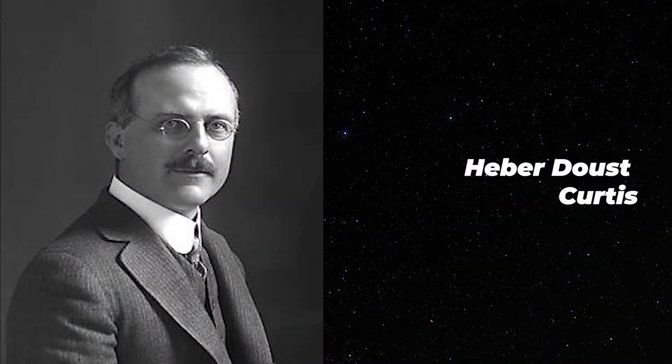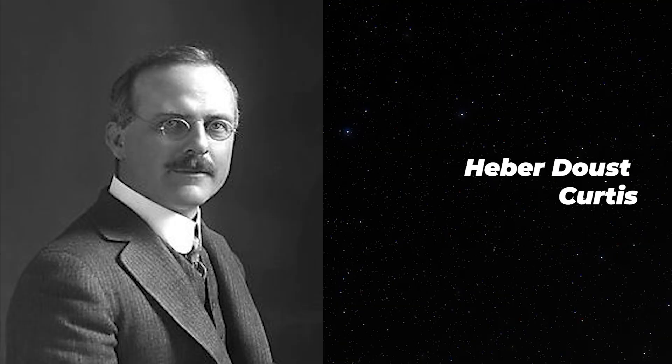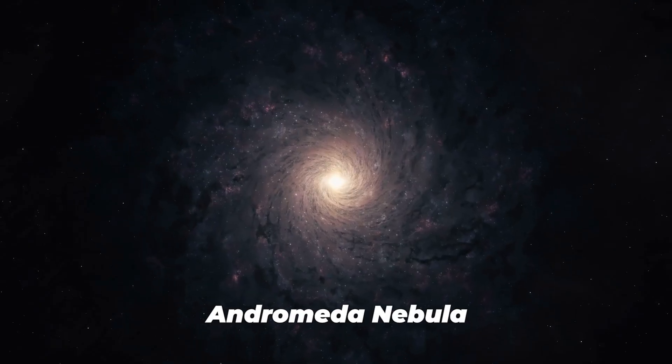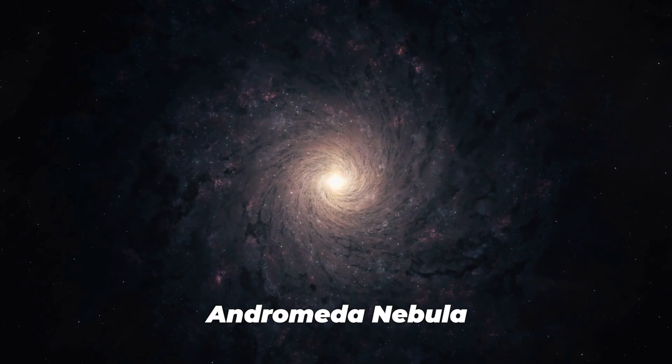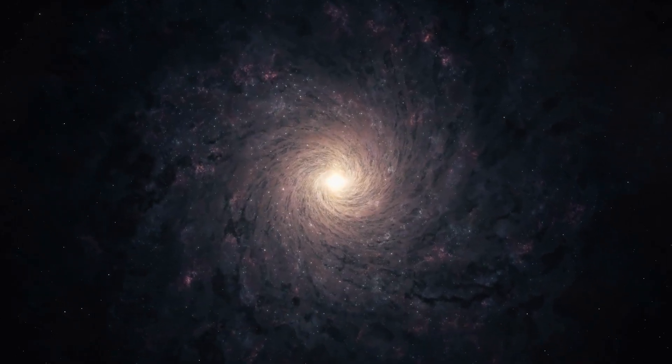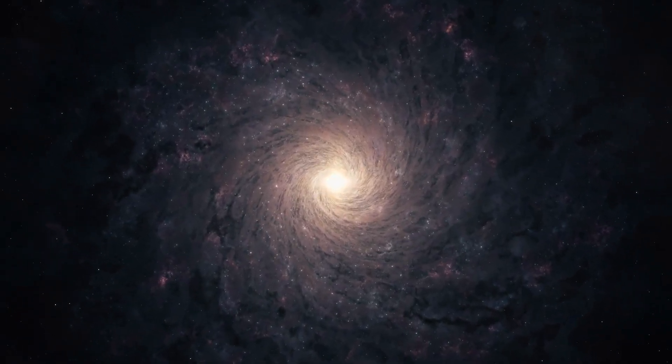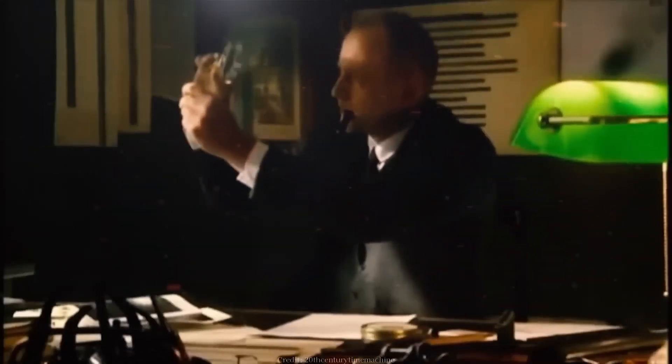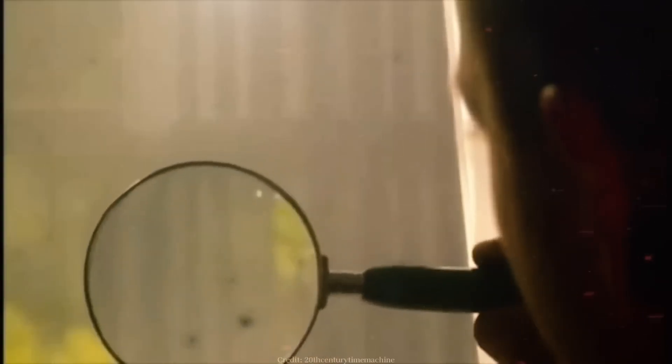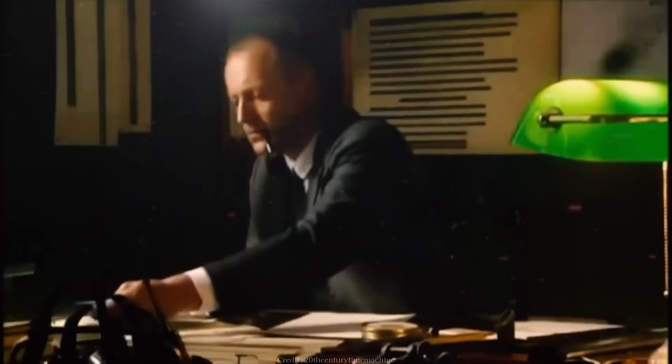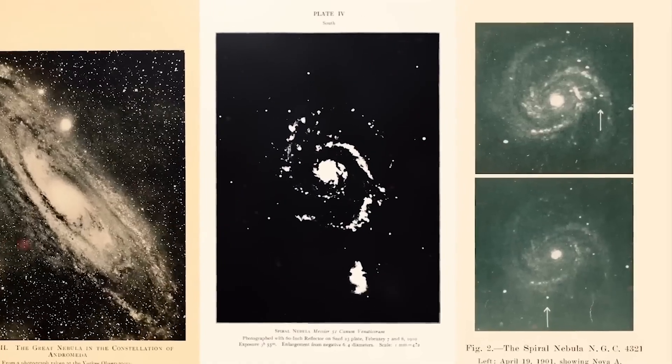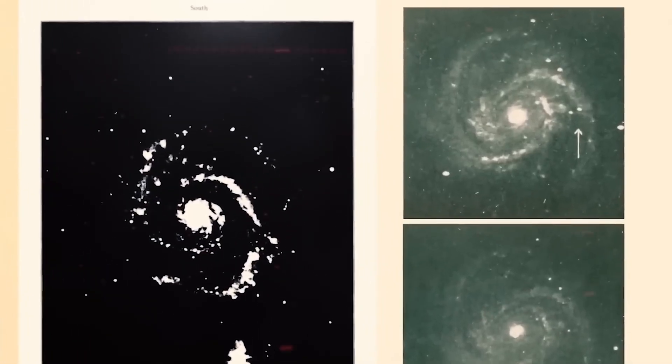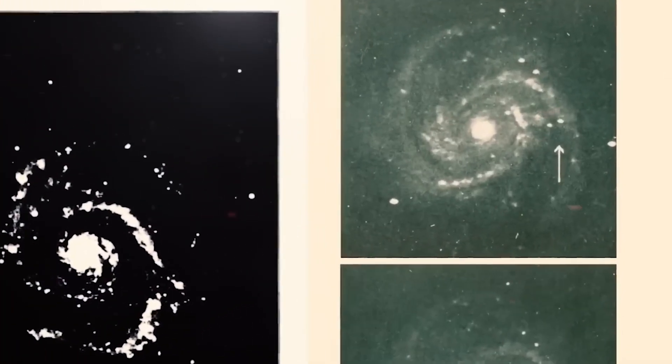Then in 1917, Heber Curtis spotted a sudden flare inside what people then called the Andromeda Nebula. It looked like a brand new star bursting to life. Nova usually brightened fast and fades slowly, so the event caught his attention. Driven by curiosity, he dug through old photographic plates hoping to find more clues. To his surprise, he uncovered 11 additional nova in the same region. But what fascinated him even more was how faint they appeared compared with similar events in our own galaxy.